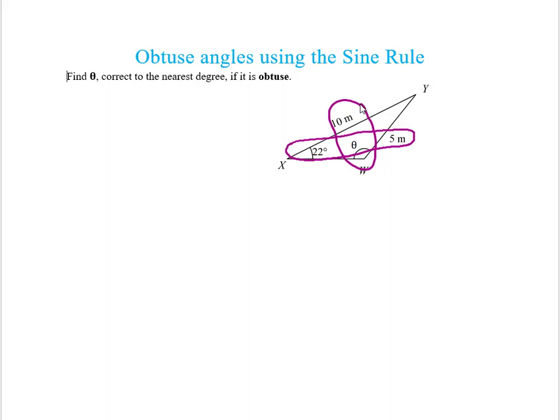So now I'm going to set up my sine rule. I'm finding theta, so I'm going to say that sine theta over the side that belongs to that, which is 10, is equal to sine 22, and the side of the angle that belongs to that is 5.